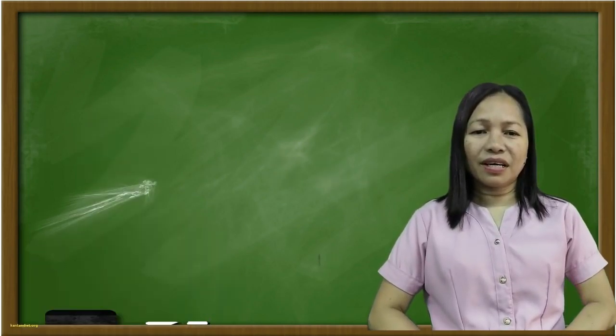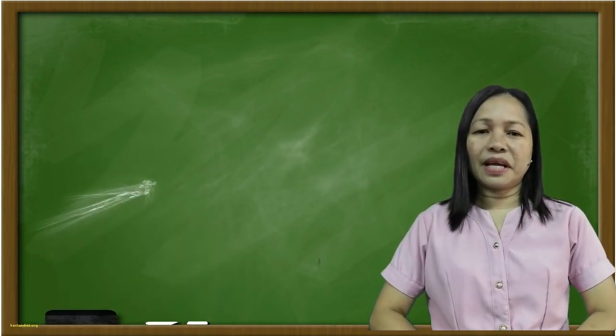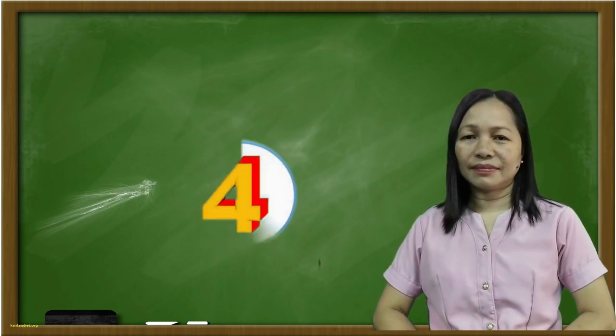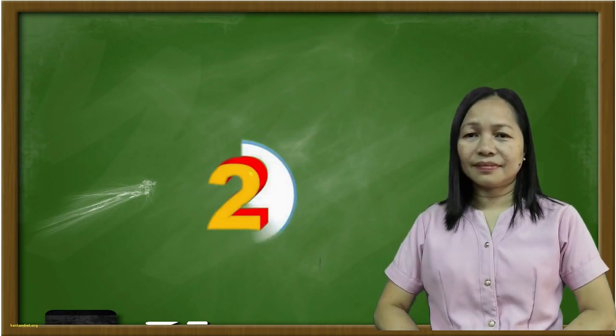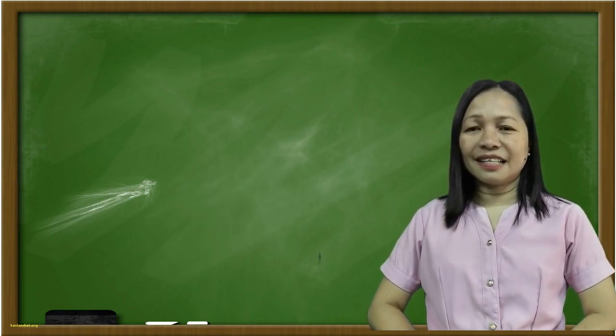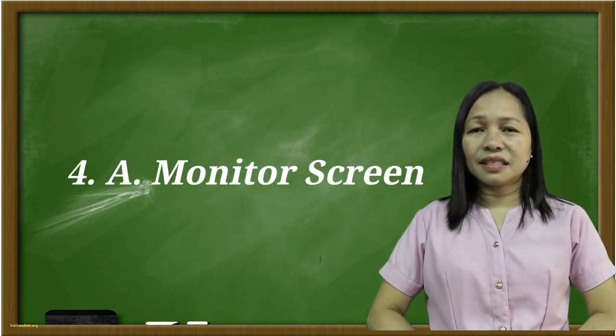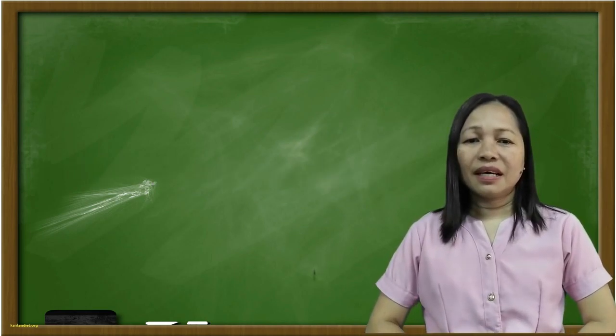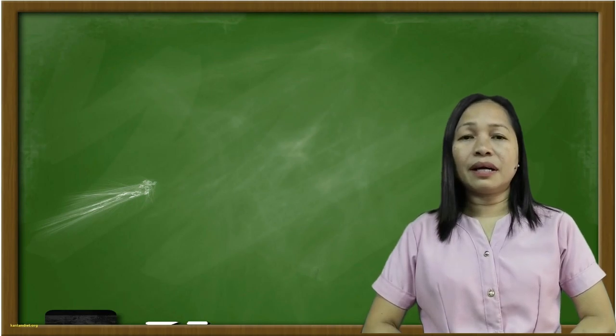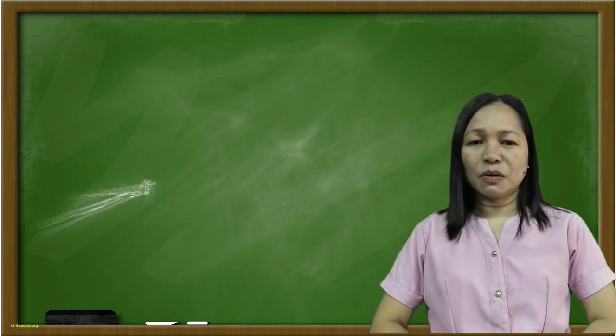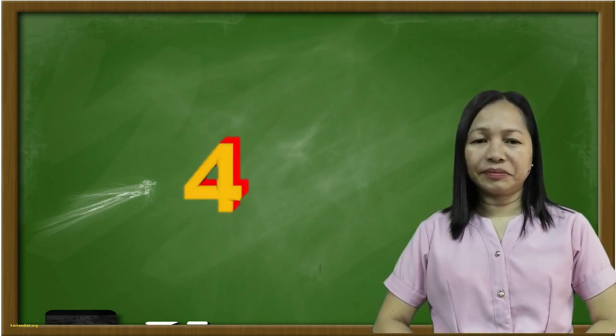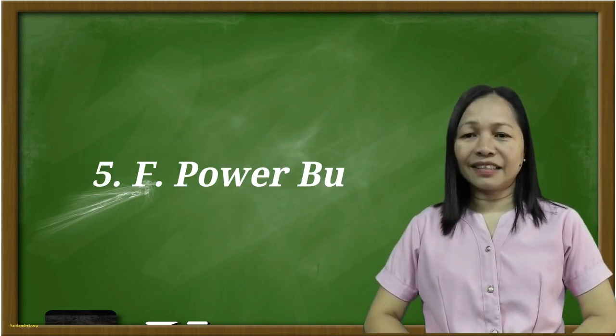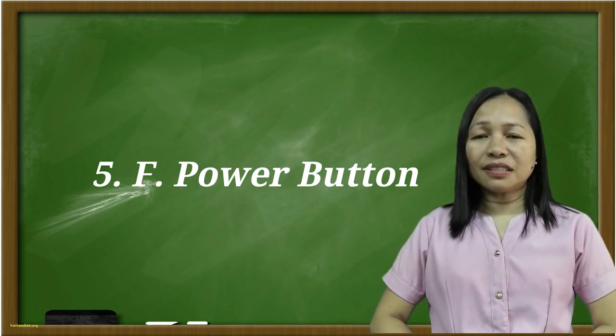Number four, this is where you frame the image you want to capture. What is it? The answer is letter A. Monitor screen. Good children. And number five, it is used to turn the camera on and off. What will be your answer? The answer is letter F. Power button.